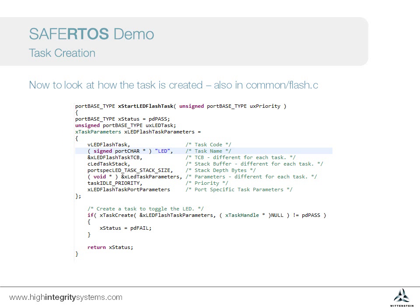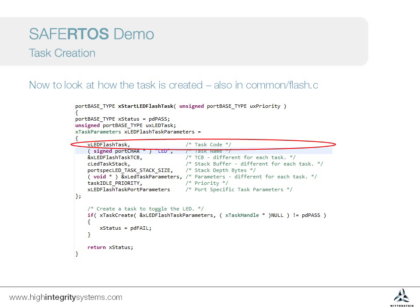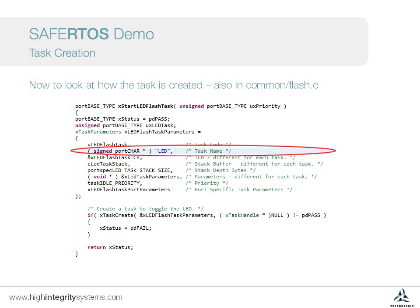So how do we create or instantiate a task? There's a simple API call to do this. It takes a basic set of parameters that provide some key information to the RTOS. Firstly is the task function code — this is the function we saw on the previous screen. Next is a name, just a character string, and this is used by the StateViewer debug tool to refer to the task.